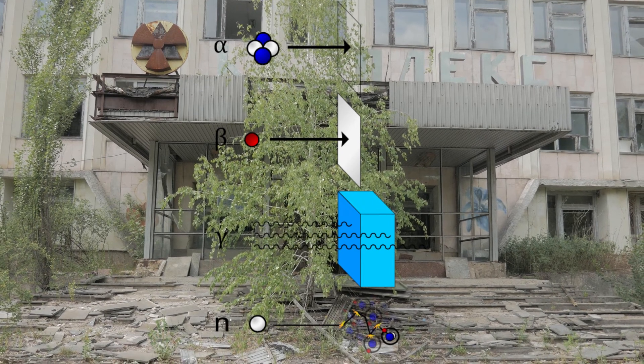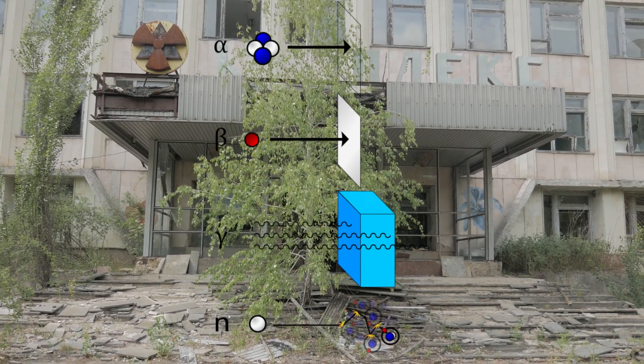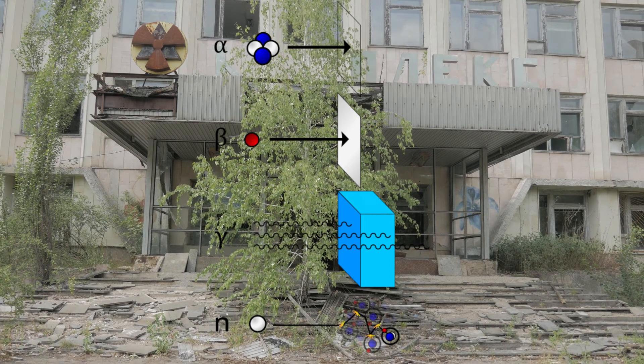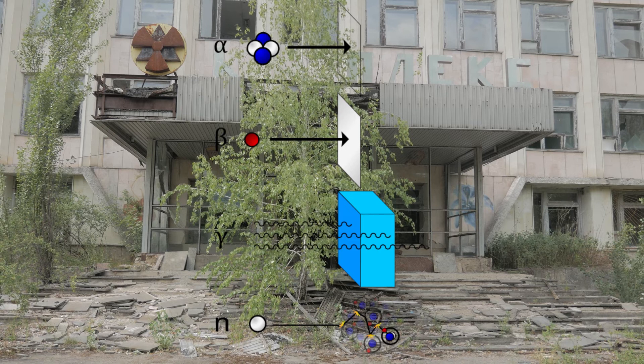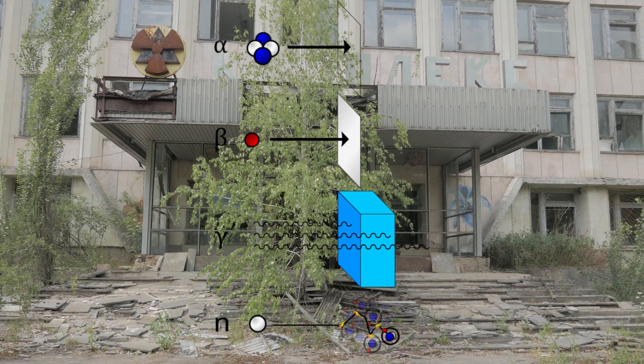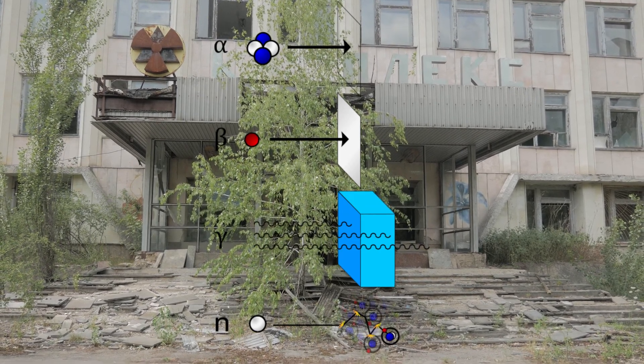Ionizing radiation has the ability to go through things but it doesn't have very much depth to that penetration. Alpha rays are the most powerful of ionizers but they have the lowest penetration.